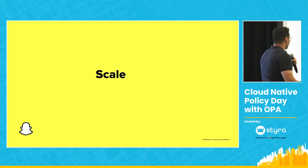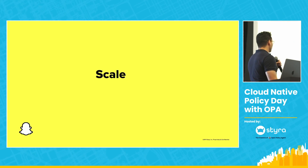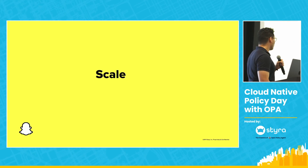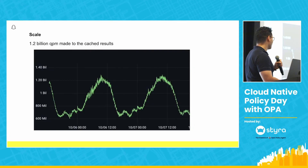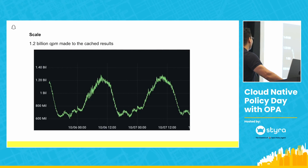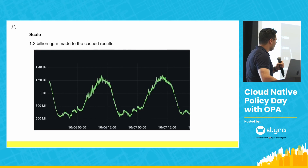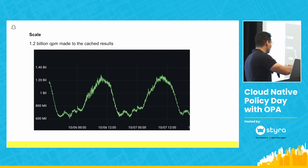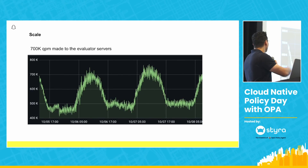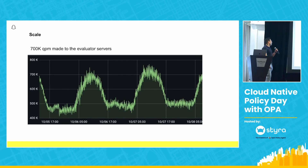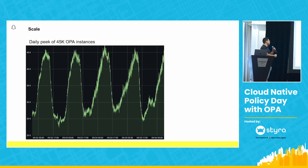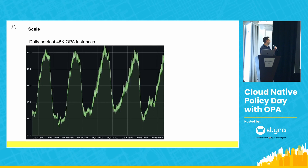Armed with these two expansions of our solution, we're able to reach a much higher scale — we can get all services at Snap onboarded now. We're able to get to a scale of 1.2 billion queries made per minute to our cached results. Queries that go beyond the cache to the actual servers are 700,000 queries per minute to our evaluator servers. And we have daily peaks of 45,000 OPA instances.